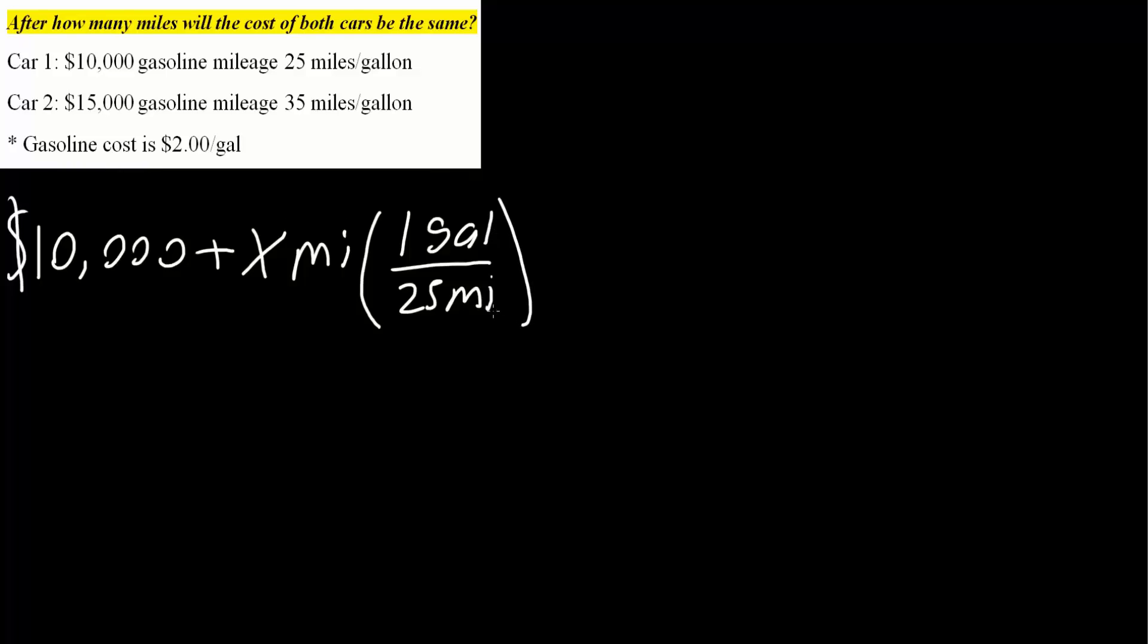Next, we want to know cost. We're given that gasoline costs about $2 per gallon, so we can say that 1 gallon is $2. This is Car 1 and we want to determine x. This is one car, and we want to know when both of these cars will equal each other.